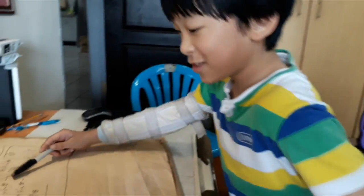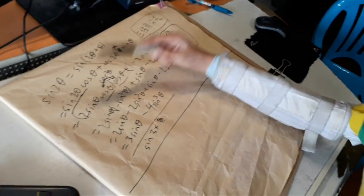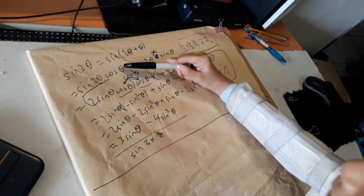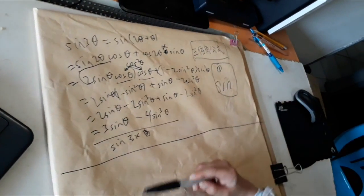So today we have sine of 3 theta. First of all, 3 theta equals 2 theta plus theta. So we can write this as sine of 2 theta plus theta.